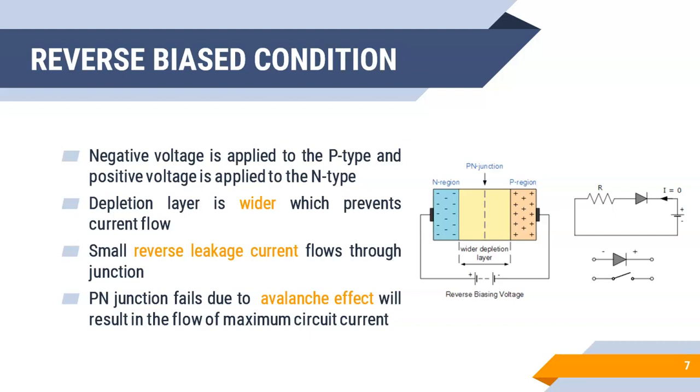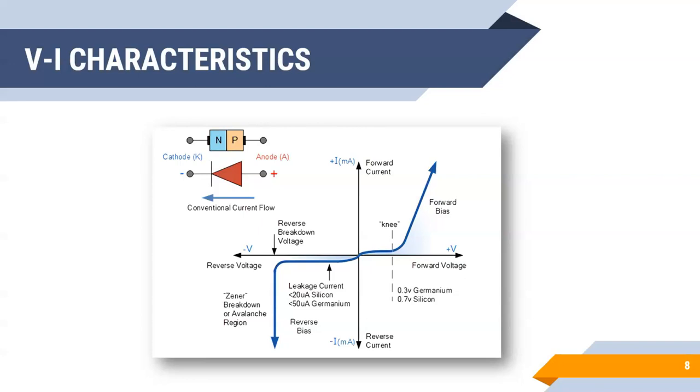That's all about the biasing conditions. Coming to the end, this graph explains the relation between voltage and current in both forward and reverse bias conditions. As we have seen earlier, in forward bias condition, we will have sudden current flow at the knee voltage.